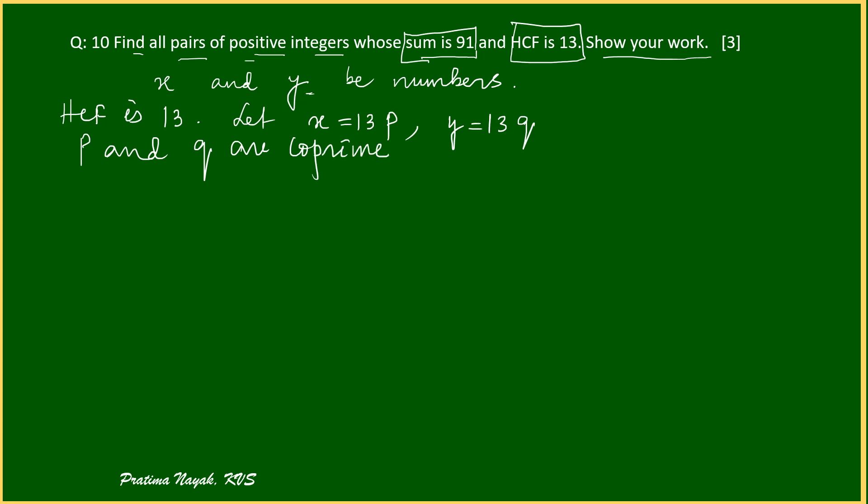Now their sum is 91. So X plus Y is equal to 91. That means 13P plus 13Q is equal to 91.